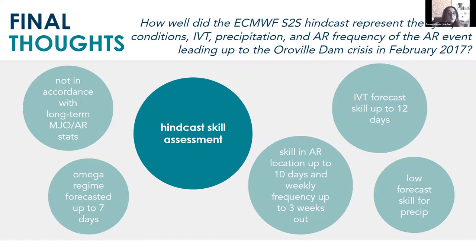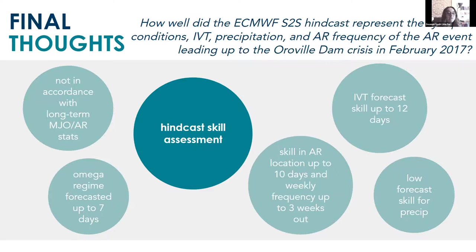In conclusion, we did make some progress on answering our question on S2S model skill for AR events leading up to the Oroville Dam crisis. However, our one question led to several other questions: can we improve results with bias correction? What skill do we have in predicting multiple AR events in one season or high-intensity AR events? Can we leverage knowledge of MJO, QBO, and ENSO to improve prediction skill? In all, we only really saw skill in predictions of this AR event at less than two weeks. For more discussion please come to our extended session this afternoon.